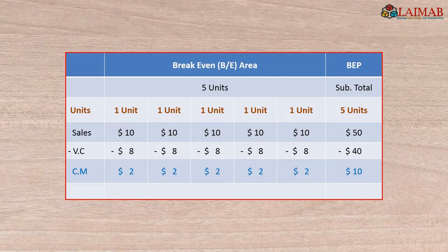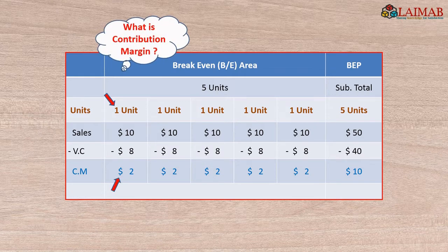At first, the company is able to sell one unit pen at $10. After subtracting variable cost per unit of $8, it creates a $2 contribution margin. Now the question is: what is contribution margin?